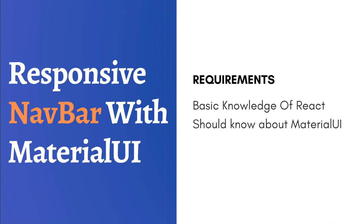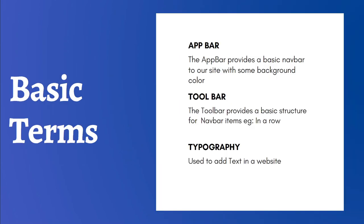Let's cover some basic Material UI components we'll use. There is the AppBar, a pre-built component that provides a basic navigation bar at the top of the web page. There is a Toolbar which structures items in a row or column, making a block of all items inside the AppBar. And there is Typography, which is used to add text inside the nav bar.